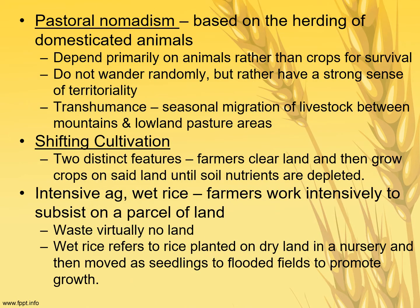Pastoral nomadism, found in dry areas of Northern Africa, the Middle East, and East Asia, is based on herding domesticated animals. As a subsistence form, they herd animals for their own survival, primarily using them for dairy. They do grow crops like wheat in the summertime and typically stay in one place for a season. They don't wander randomly but have a strong sense of territoriality and practice transhumance — the seasonal migration of livestock between mountain and lowland pasture areas based on grass growth. Shifting cultivation involves slash and burn and is found in tropical areas.